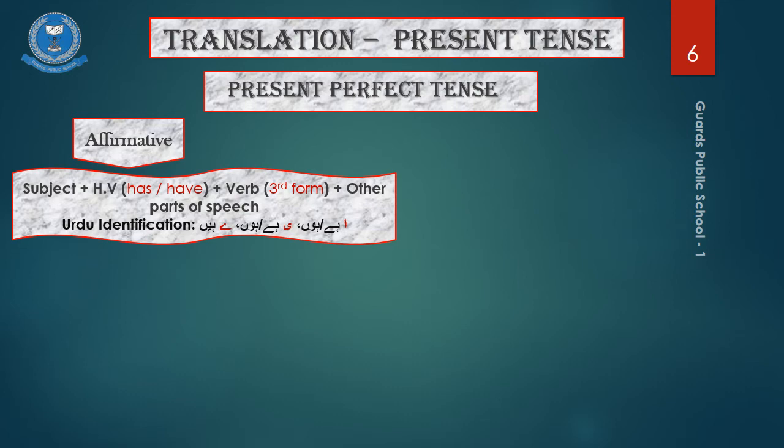So the Urdu sentence identification of this aspect will be alif hai aur hun for the singular masculine subject, chhoti yeh hai aur hun for the feminine subject in the singular form, and bari yeh hai for the plural subject. For example, usnei darwaza bant kar diya hai. He has shut the door.